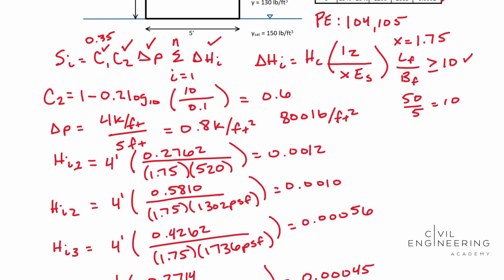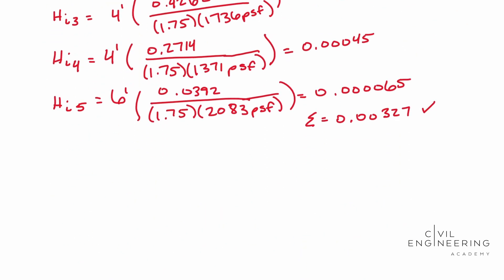So let's rewrite the equation. Si is equal to C1 times C2 times delta P times sigma I equals one to N of delta HI. And so we know C1 is 0.35. We know that C2, we solved that earlier, 0.6. And then our delta P is 800 pounds per square foot. We're going to multiply that by what we just summed up. So this is going to be 0.00327. So let's plug that stuff in. You should end up with 0.549 feet. Your units are going to be in feet.